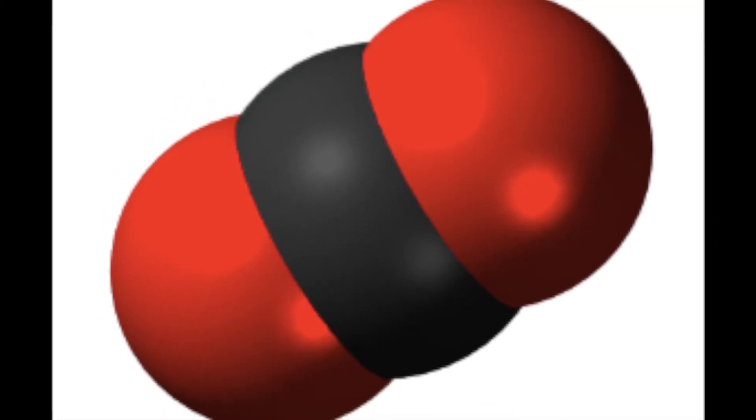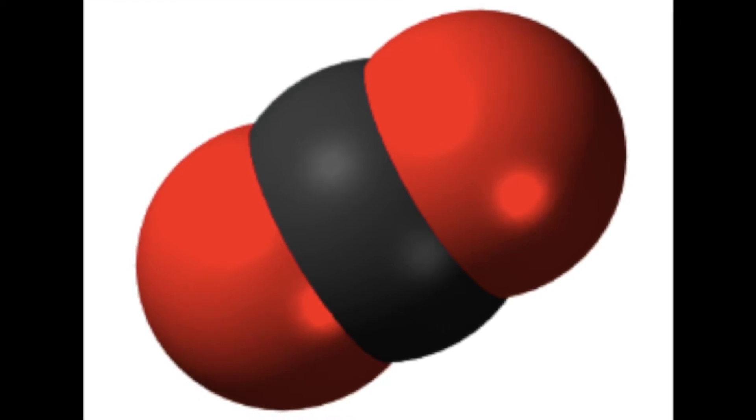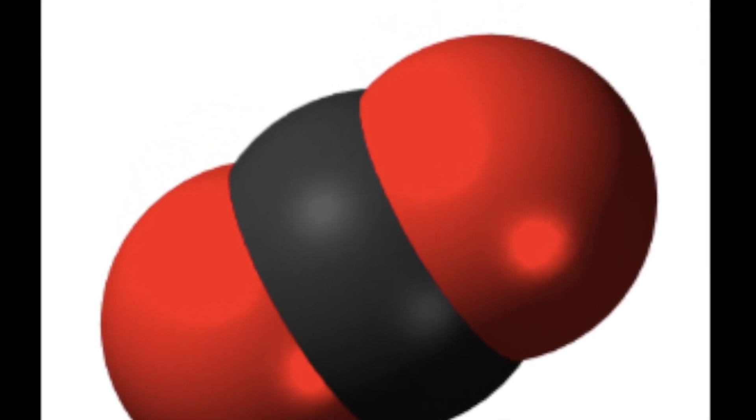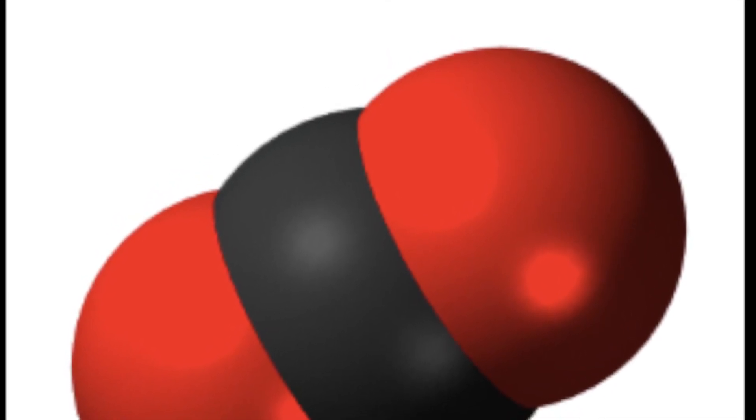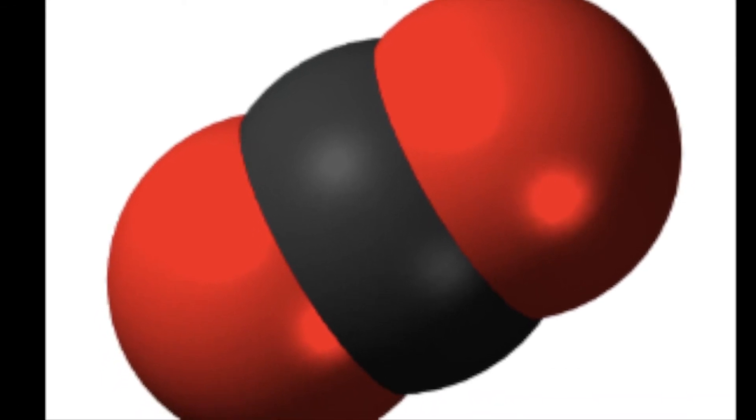Some types of matter are elements or pure substances that can be broken down into simpler substances. Many other types of matter are compounds. The model here represents a compound. The compound it represents is carbon dioxide, a gas which you exhale every time you breathe.